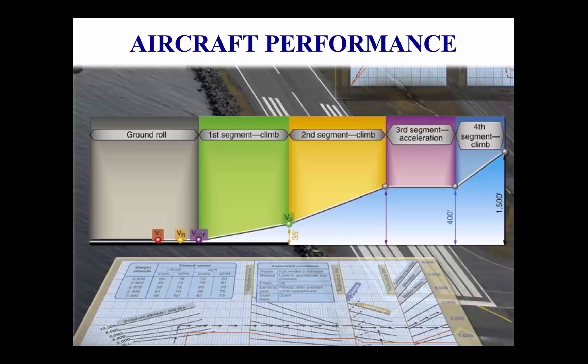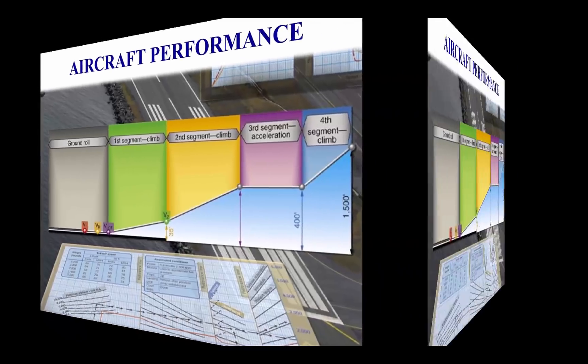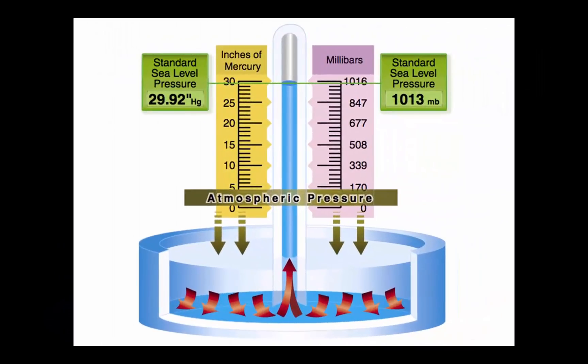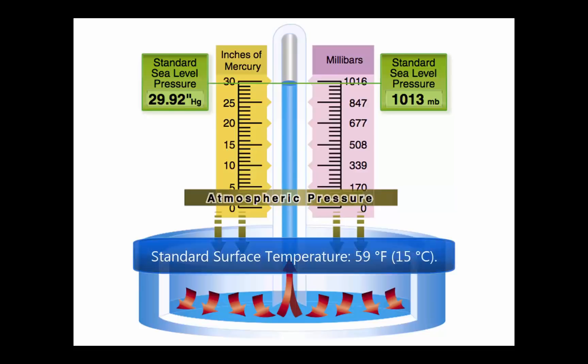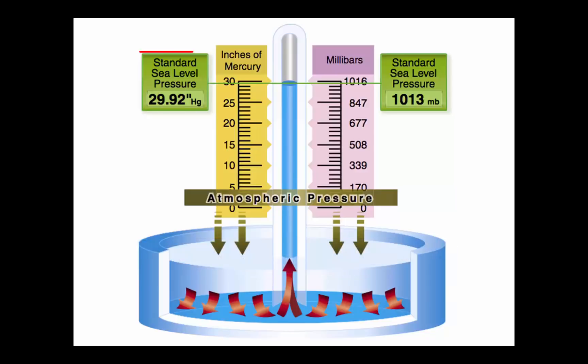The pressure of the atmosphere varies with time and altitude. Due to the changing atmospheric pressure, a standard reference was developed. The standard atmosphere at sea level is a surface temperature of 59 degrees Fahrenheit or 15 degrees Celsius and a surface pressure of 29.92 inches of mercury or 1013.2 millibars.